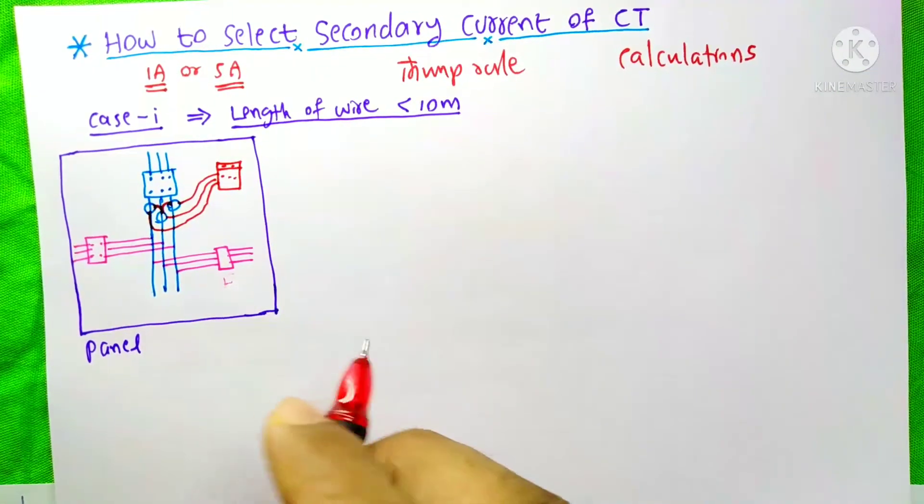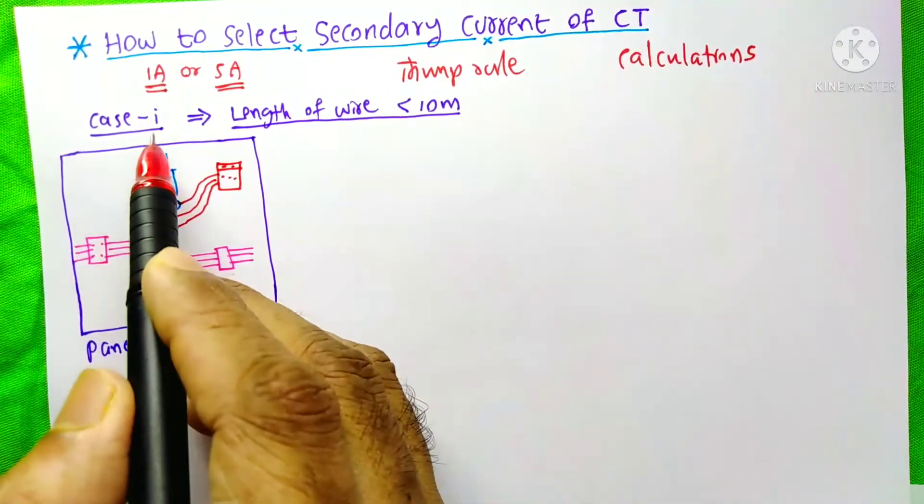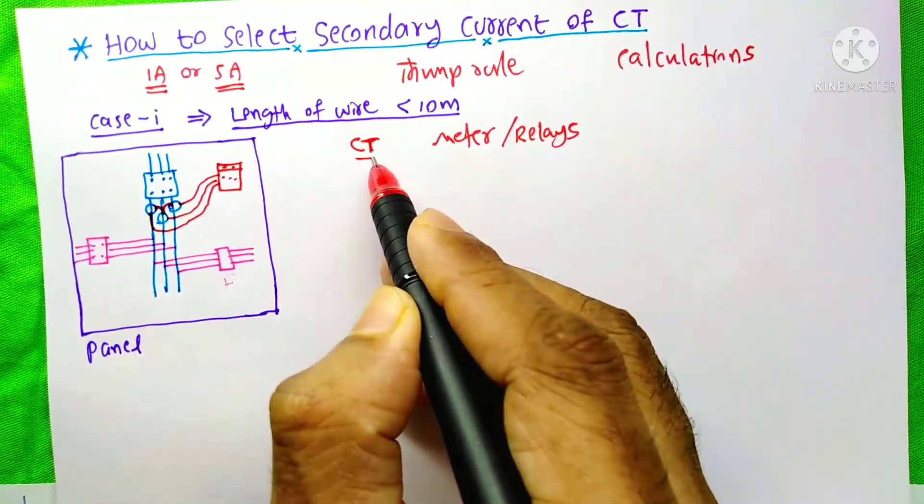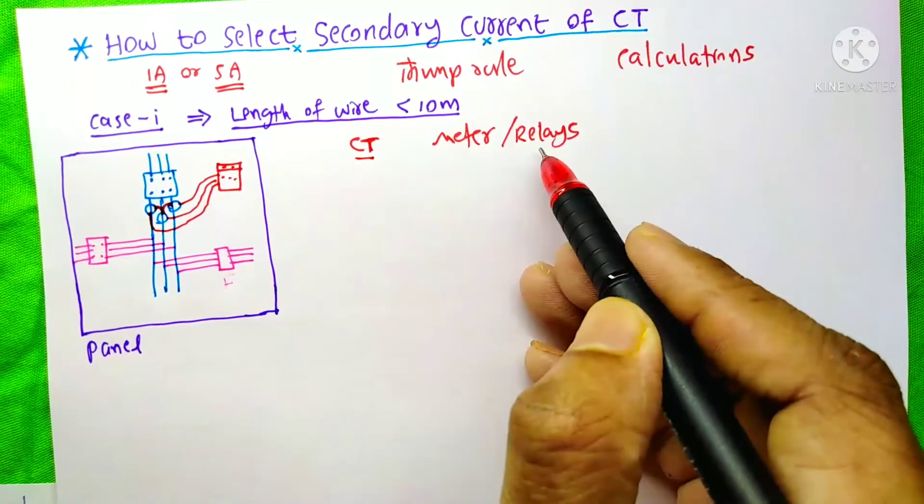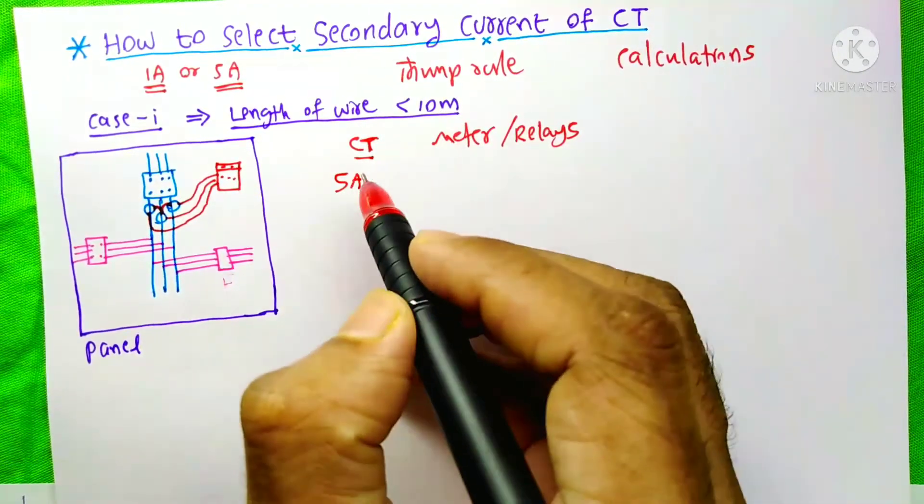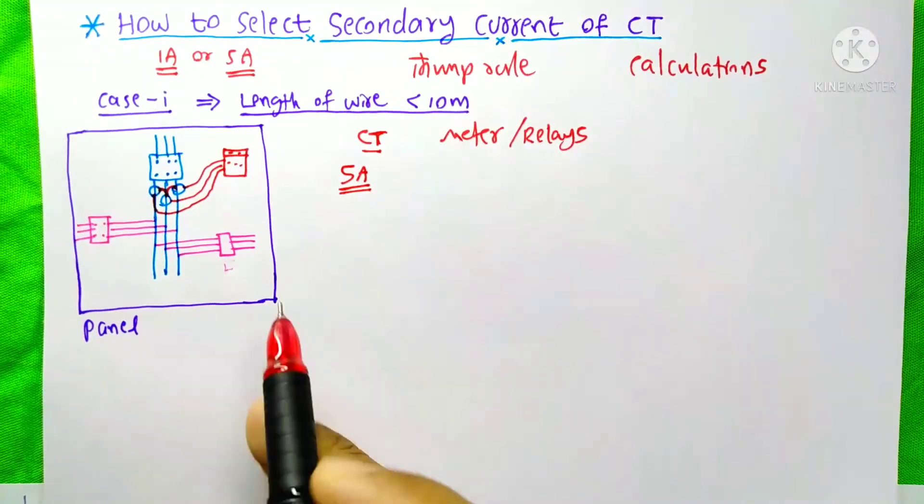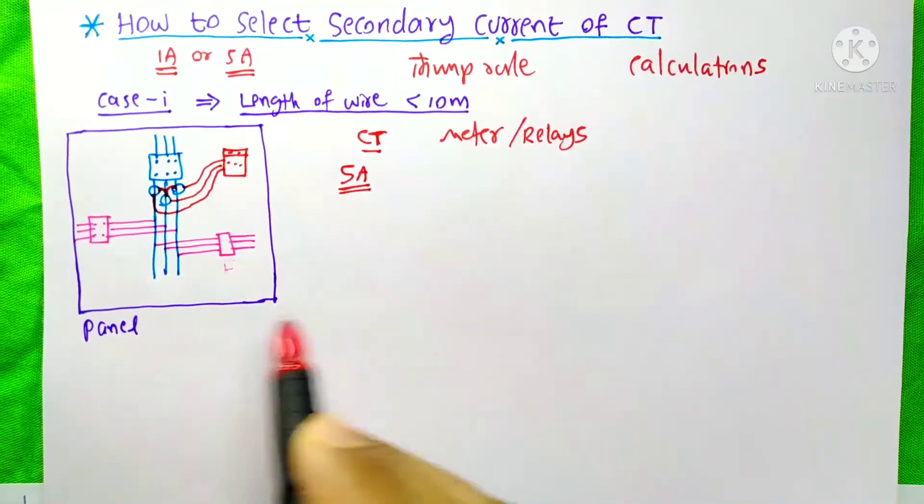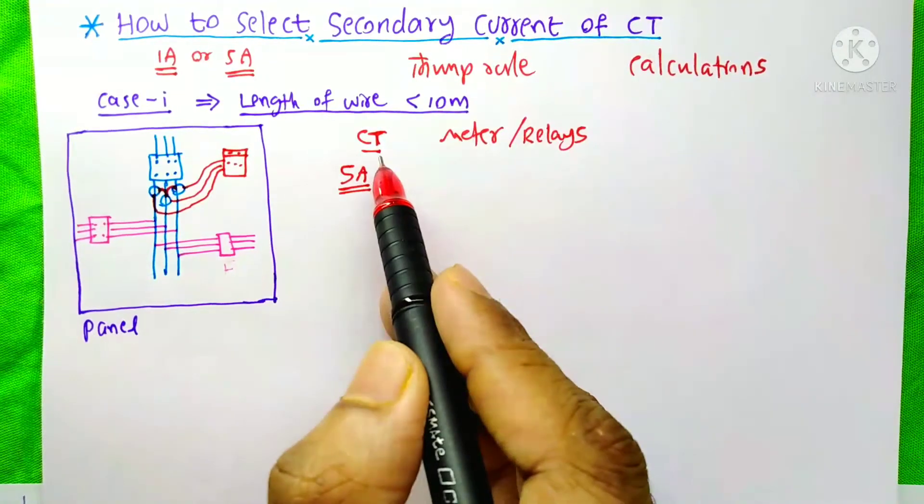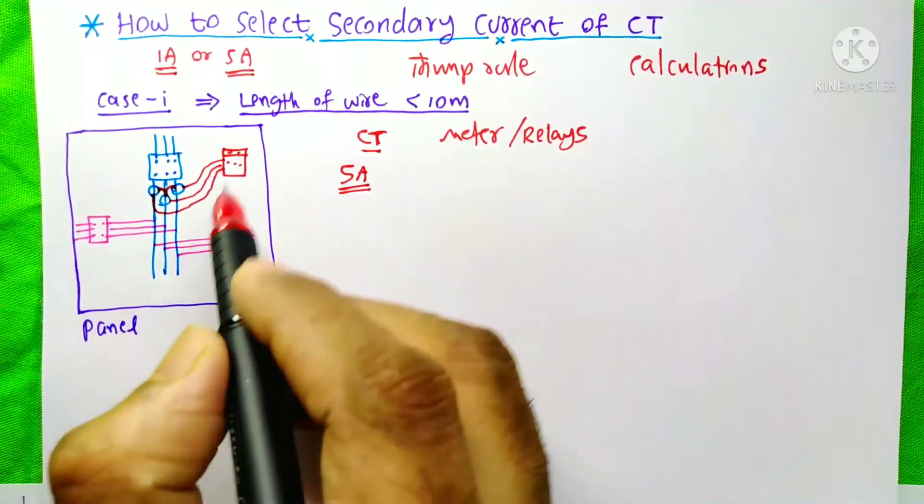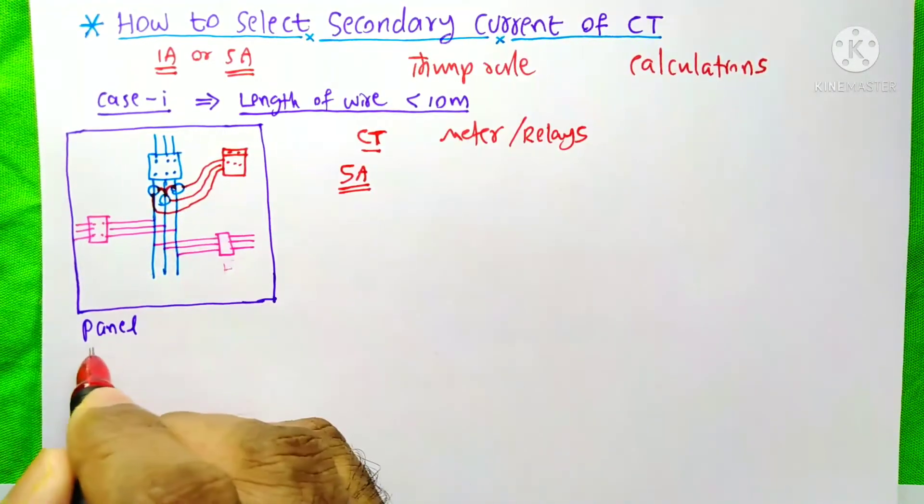Here are two cases. The first case is: if the length of the wire between CT and meter or relay is less than 10 meters, then we will use a CT with 5A secondary current. This case happens when both the current transformer and meter or relay are present on the same electrical panel.